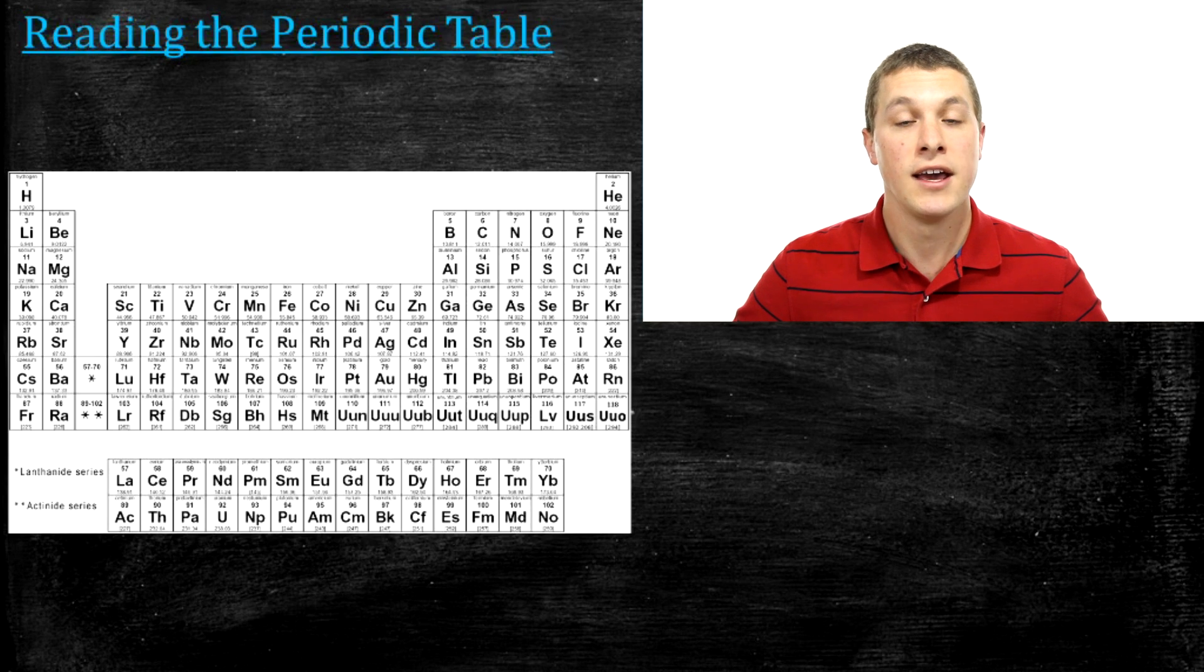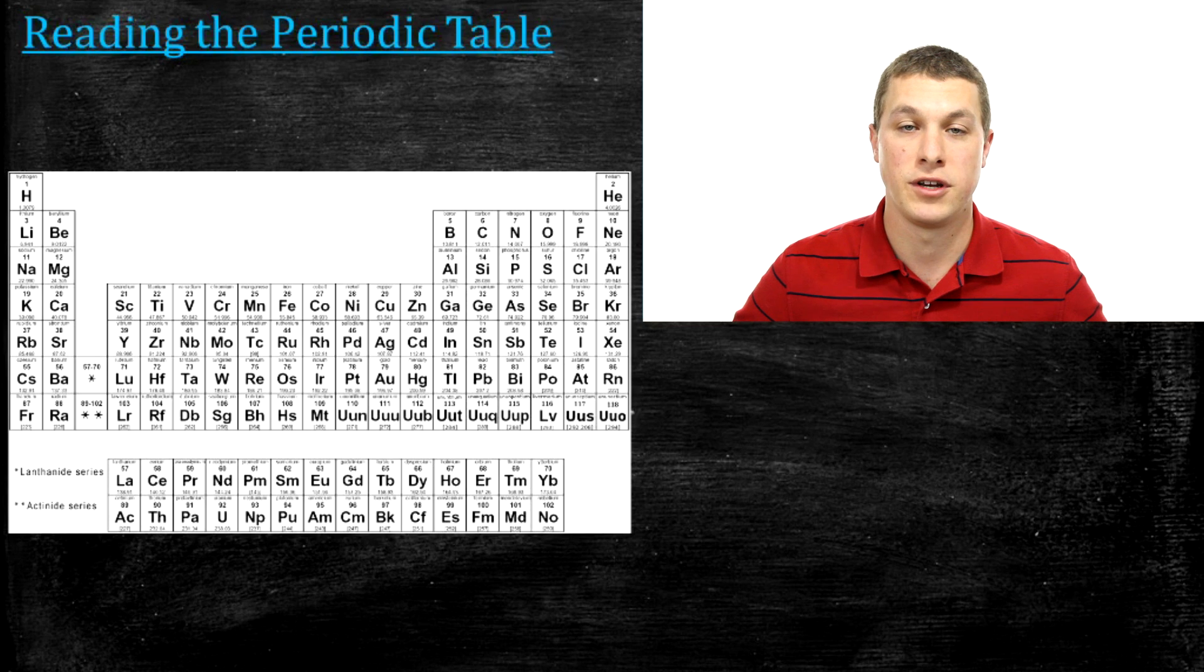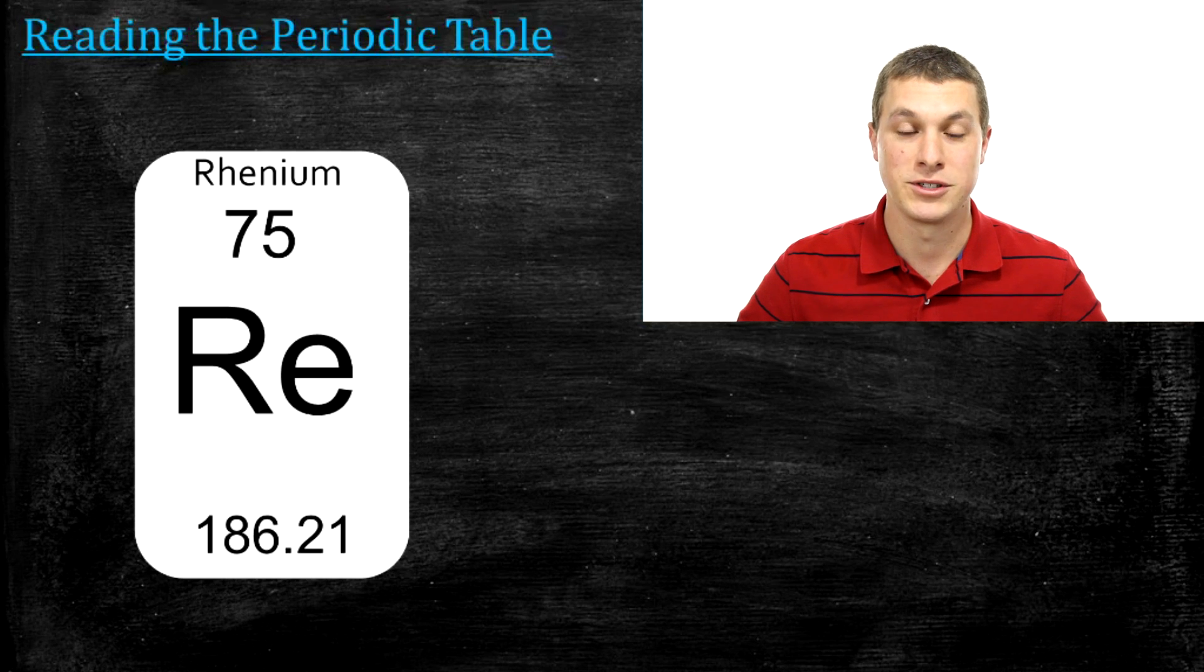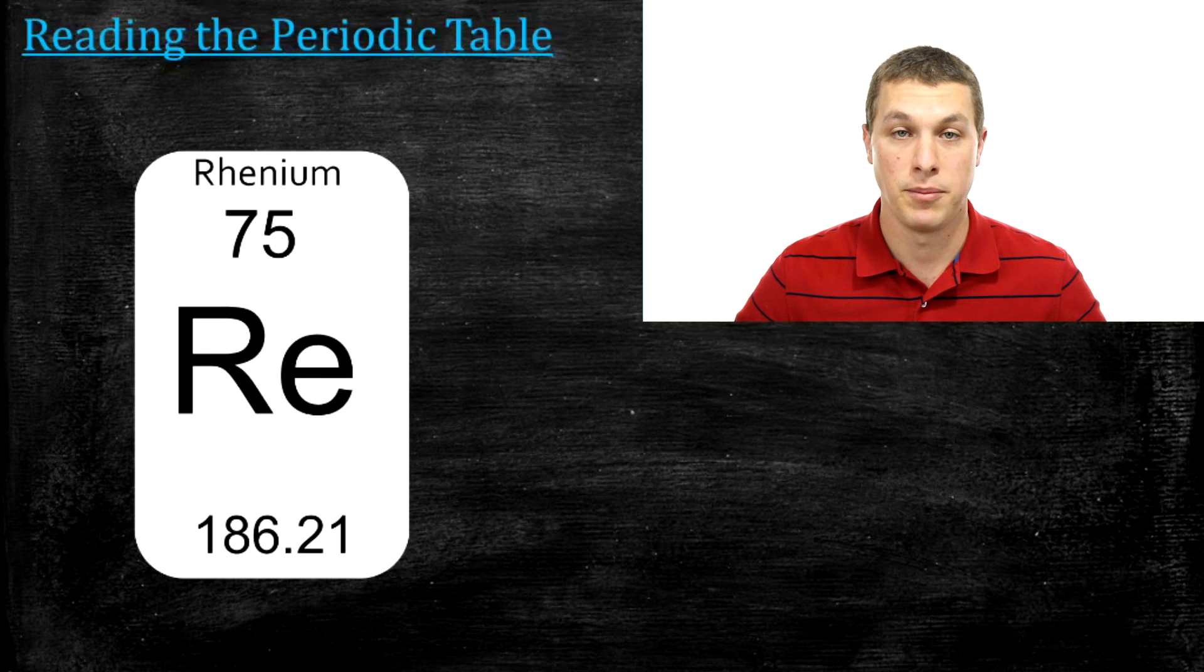What we're going to do today is take a closer look at what all the different numbers and symbols on the periodic table mean. So we're going to take a look at the element rhenium, which we're particularly fond of here at Real Chemistry.